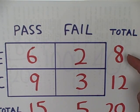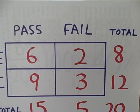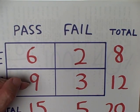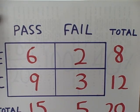So let's suppose that in the experimental group of 8 participants, 6 passed the test, 2 failed. And in the control group of 12 participants, 9 passed the test, and 3 failed.